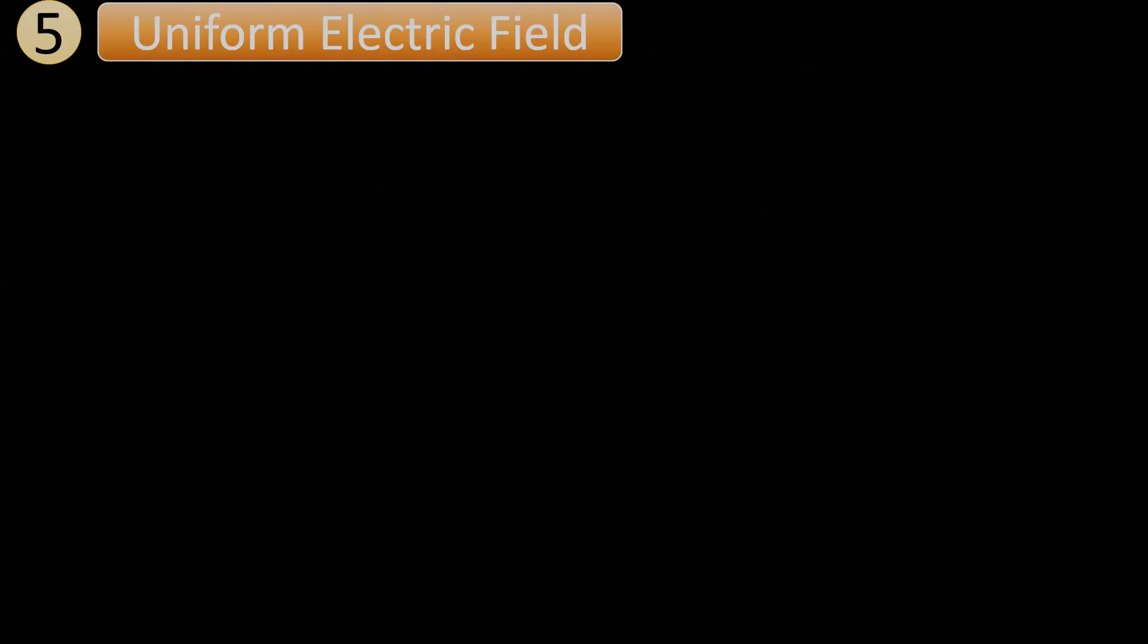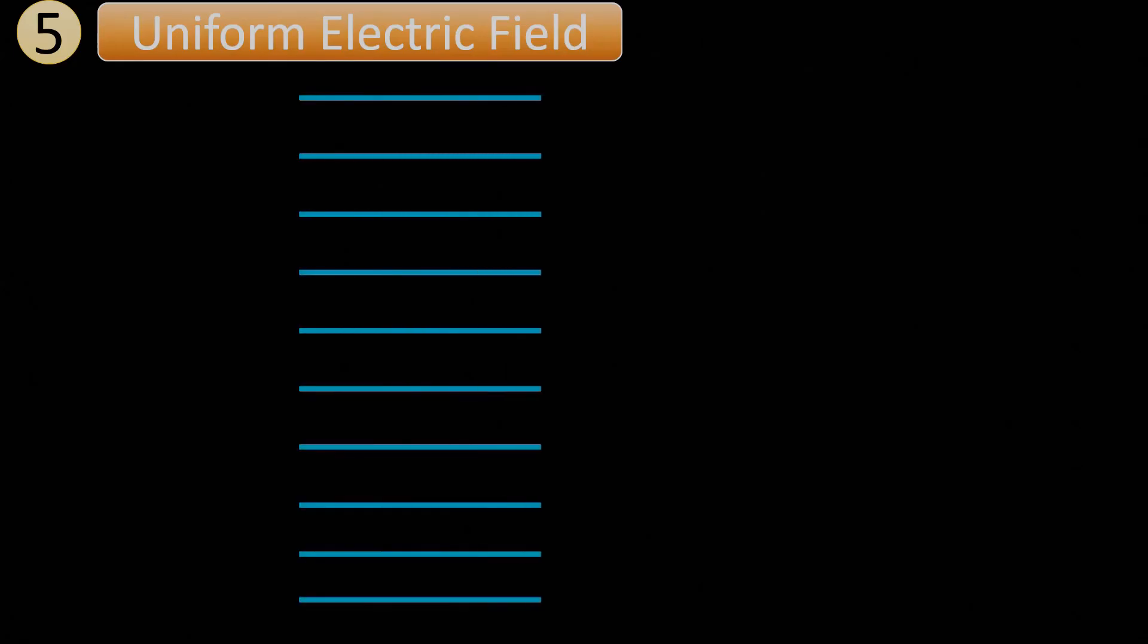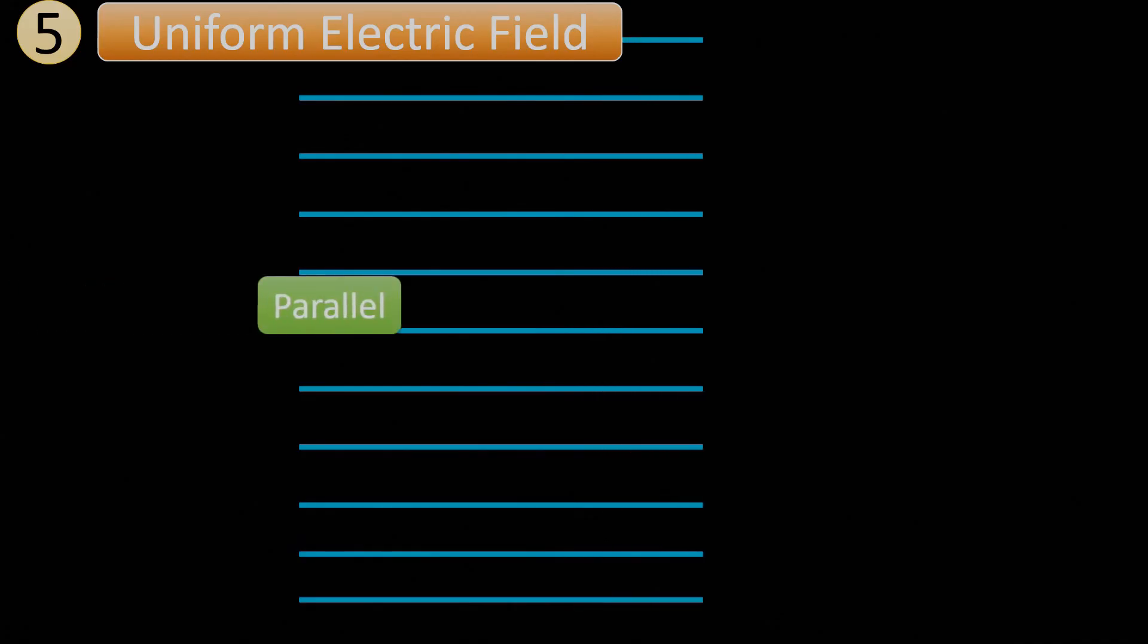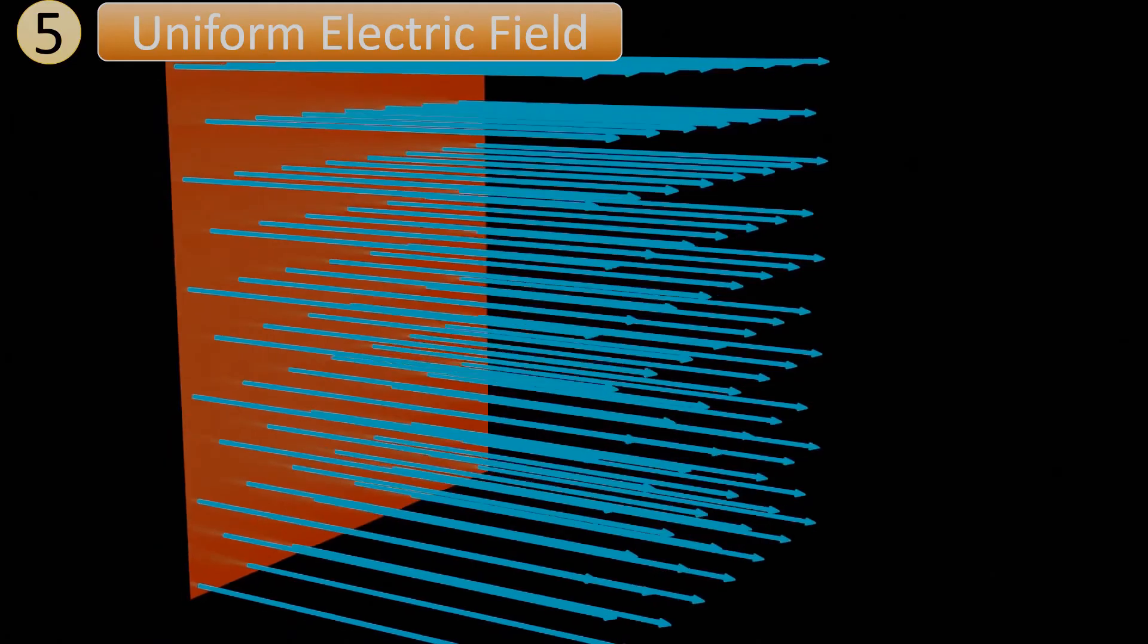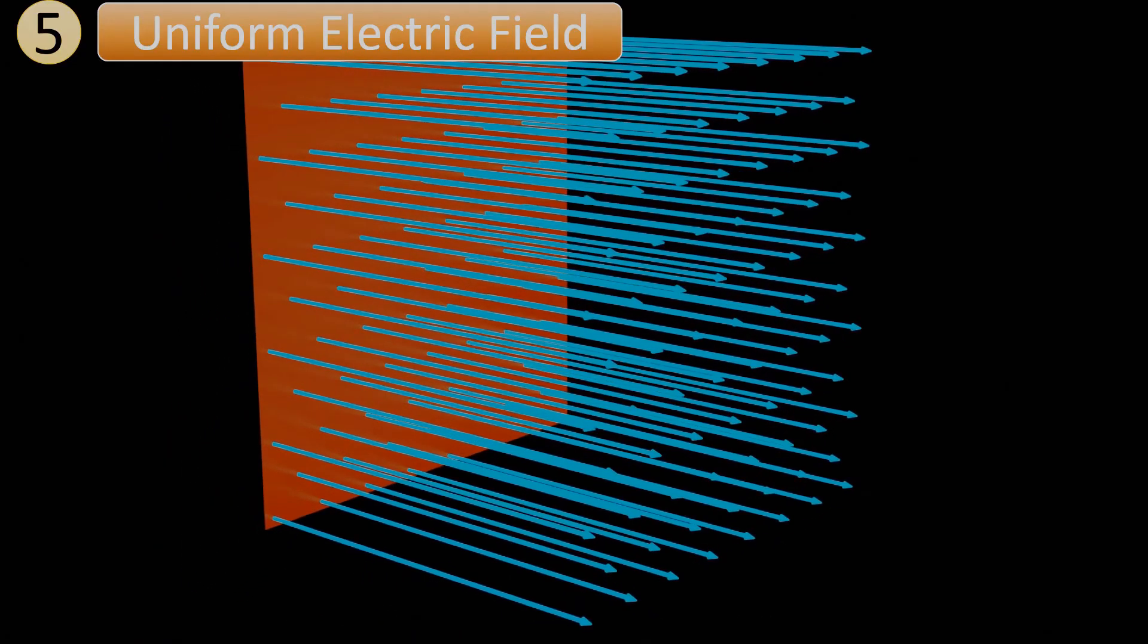The fifth point is uniform electric field. If electric field lines are pointed along the same direction, parallel and equally spaced from each other, the electric field density will be same at every point. This means electric field intensity is also same. This type of electric field is called a uniform electric field.